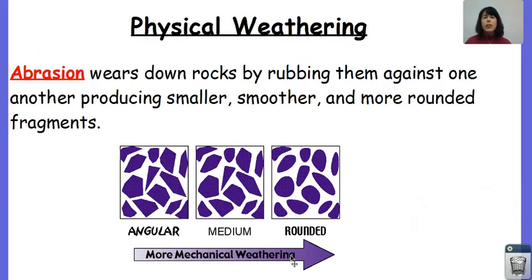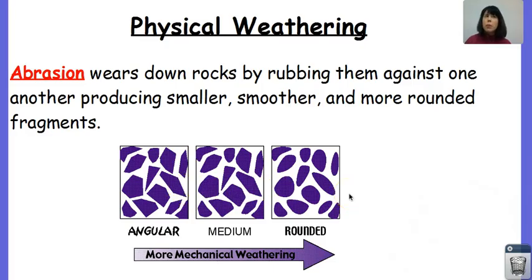Another type of physical weathering is abrasion. This is when rocks are worn down by rubbing up against each other, producing smaller, smoother, and more rounded fragments. The more mechanical weathering that we have, the more rounded the particles are — they're also getting smaller because bits are being broken off. We see this happen with beach glass: it starts off from broken bottles, all sharp and angular, and then sediments and rocks rub up against the glass, giving it that rounded and frosted appearance.